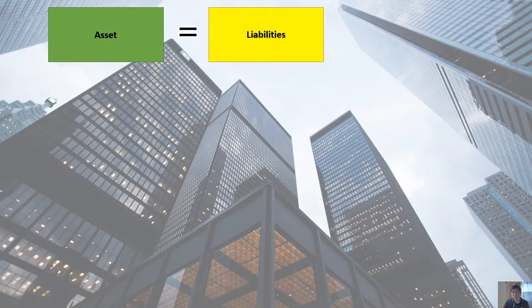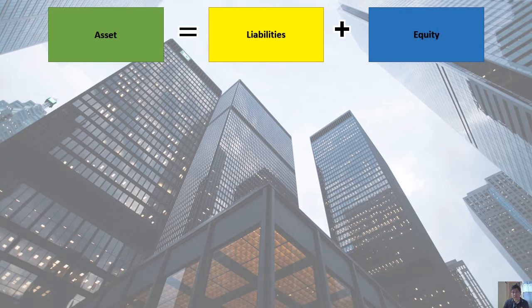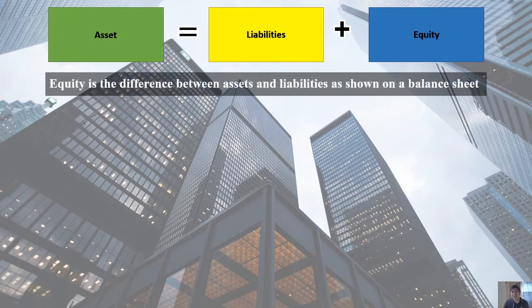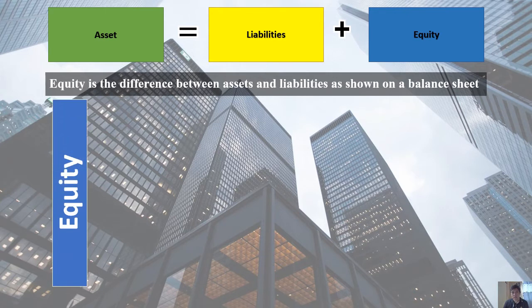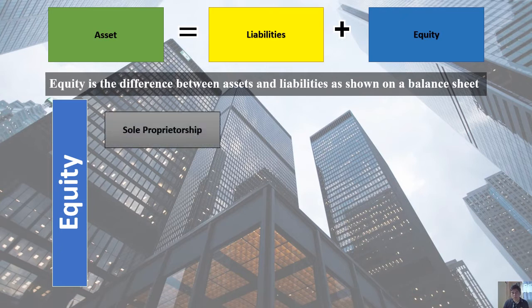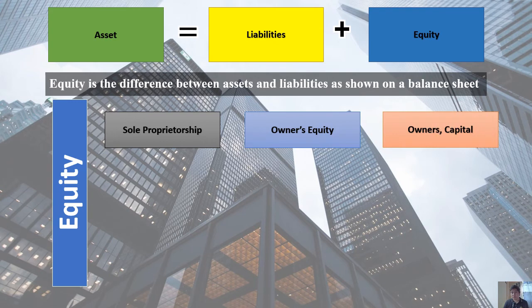Let's review the basic accounting equation to understand where shareholders' equity is located on the statement of financial position. The accounting formula is: Assets = Liabilities + Equity. Assets are everything owned by the business measurable in terms of money; liabilities are present obligations; and equity is the difference between assets and liabilities, shown on the statement of financial position. Equity is presented differently based on the nature of the business organization. For sole proprietorship, the equity account is commonly known as owner's equity, and the account reflected on the statement of financial position is the owner's capital account.